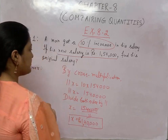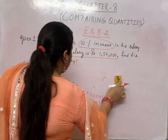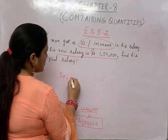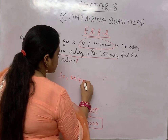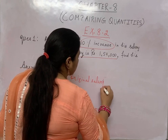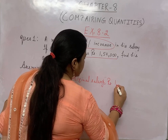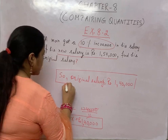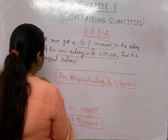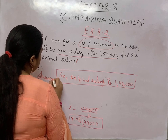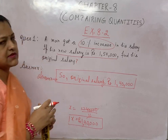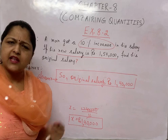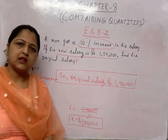So X, which I assumed as original salary, equals Rs. 1,40,000. In this way, we can solve with the help of linear equations. If the original salary is not given, we can assume it as any variable — X, Y, Z — whatever you feel comfortable with.